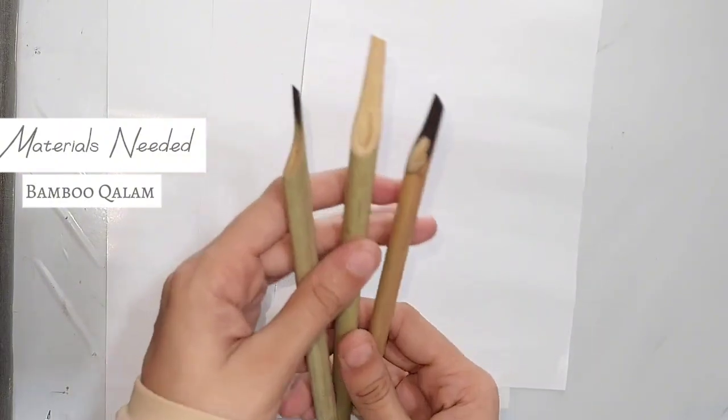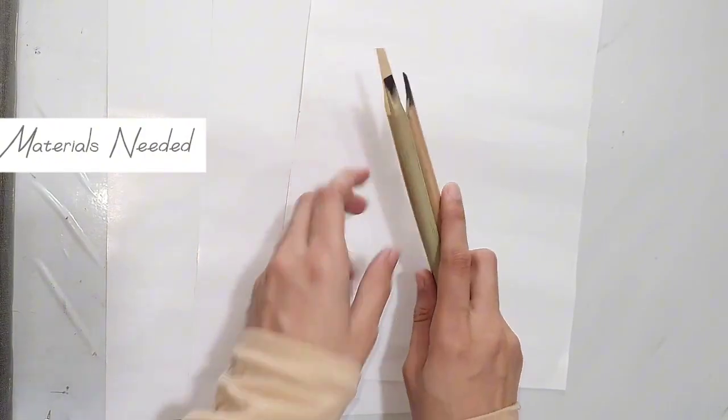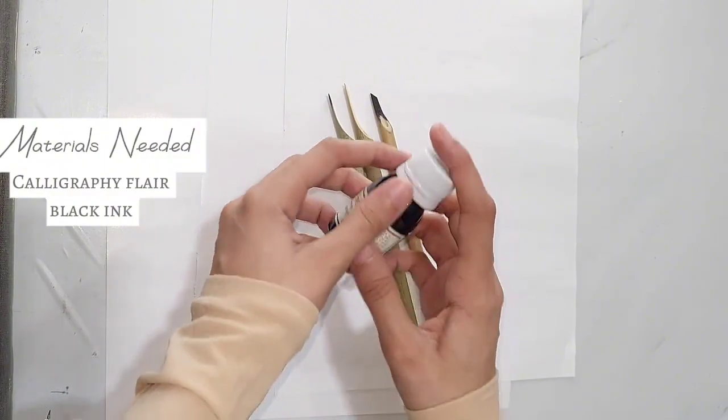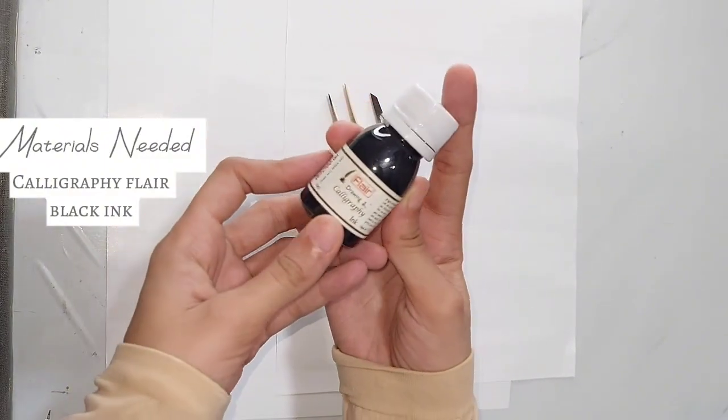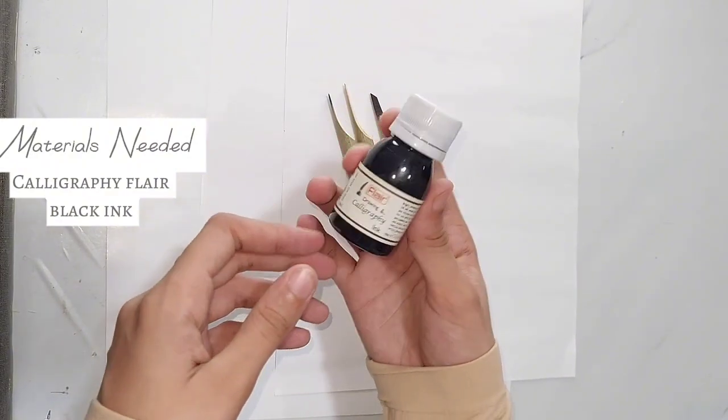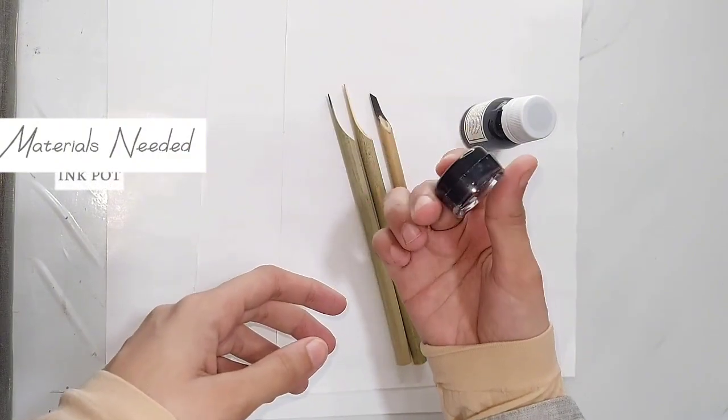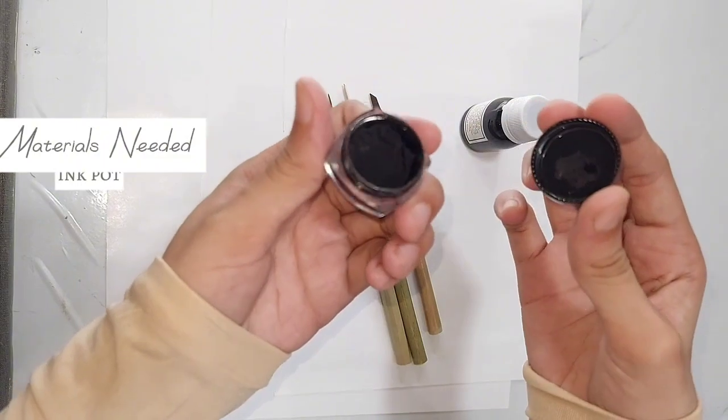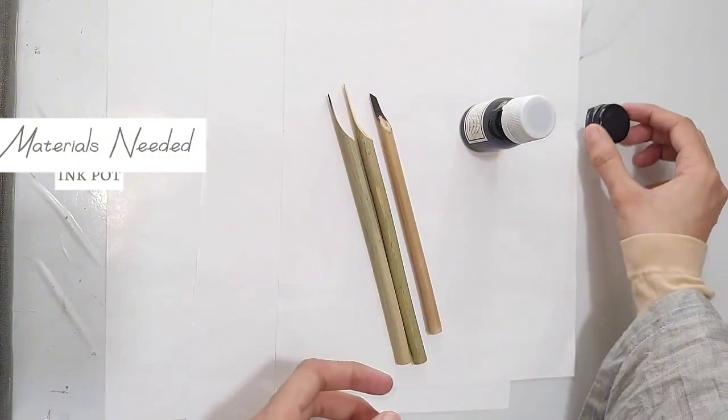These are bamboo Calligraphy qalams which are prepared with dry sticks. They are prepared with a qalam. In this tool, we can use the ink for drawing and calligraphy. We can use it on glossy sheets and canvas. We need to use this ink pot. We can use cotton or thread to prepare ink for the paper.